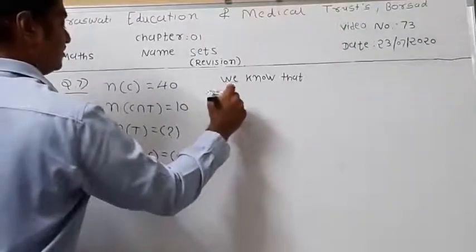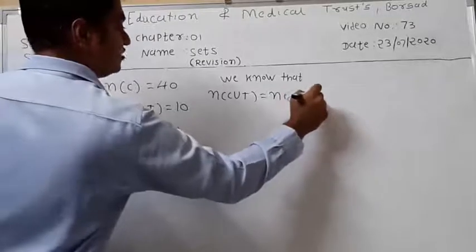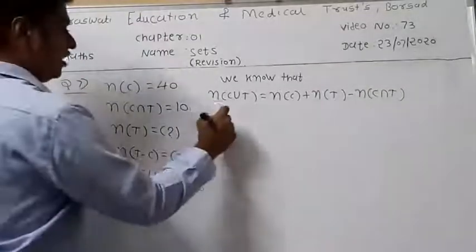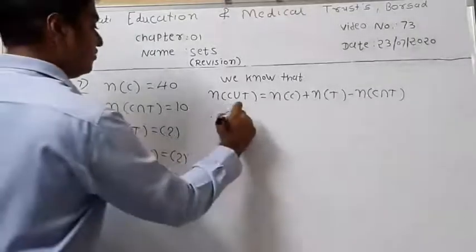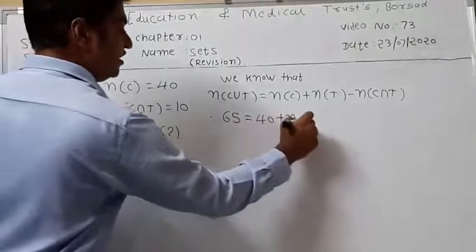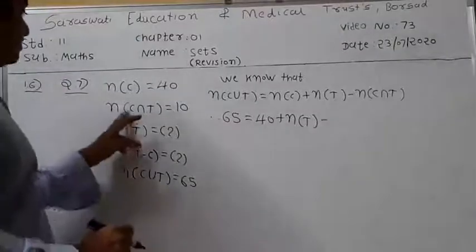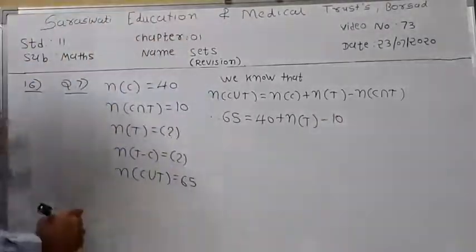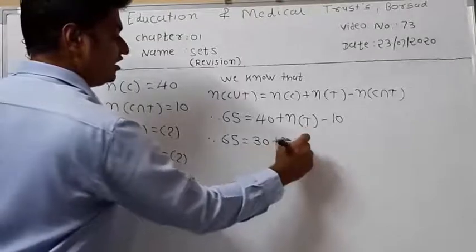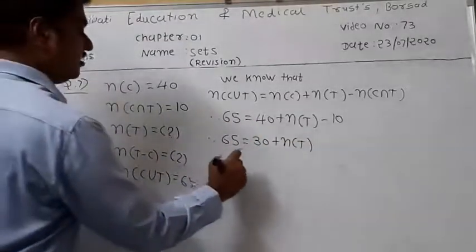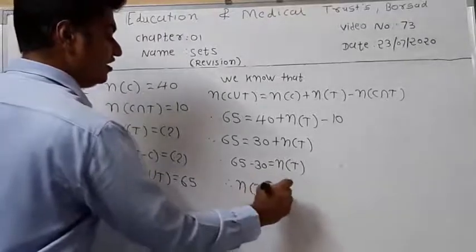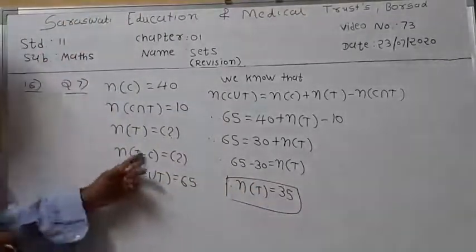Using the formula: N of C union T equals N of C plus N of T minus N of C intersection T. So 65 equals 40 plus N of T minus 10, which gives 65 equals 30 plus N of T. Therefore N of T equals 65 minus 30, so N of T is equal to 35.